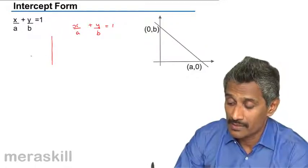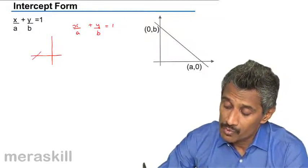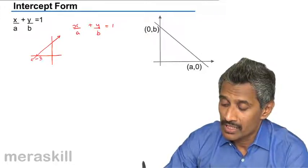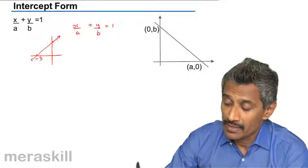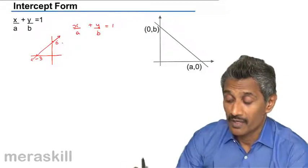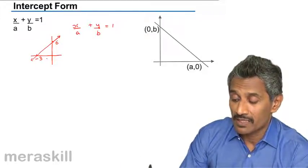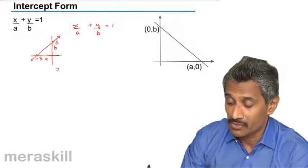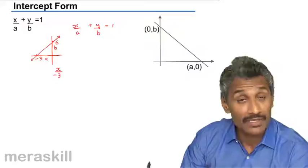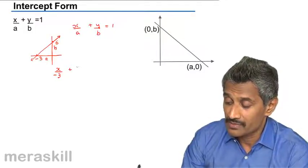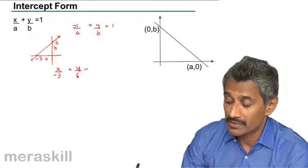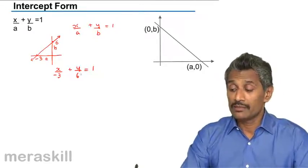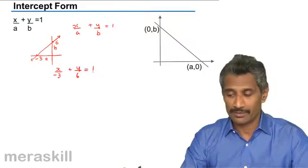So take an example like this. Suppose we are going to line over here and this is minus 3 and this is 6. So we say it will be x-intercept, that is a, and this is the y-intercept. x-intercept is minus 3 so we write x upon minus 3 plus y-intercept is 6 so y upon 6 is equal to 1. So we are writing this particular equation in the intercept form or two-intercept form.